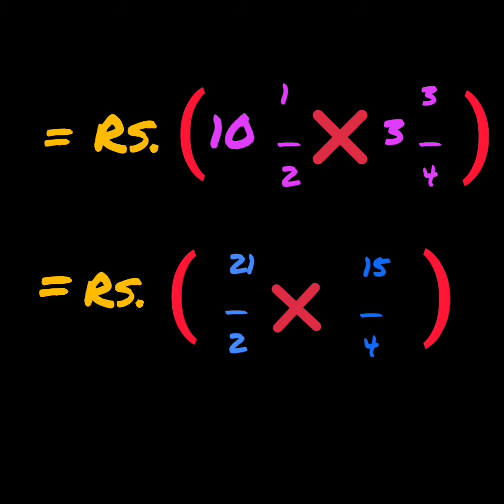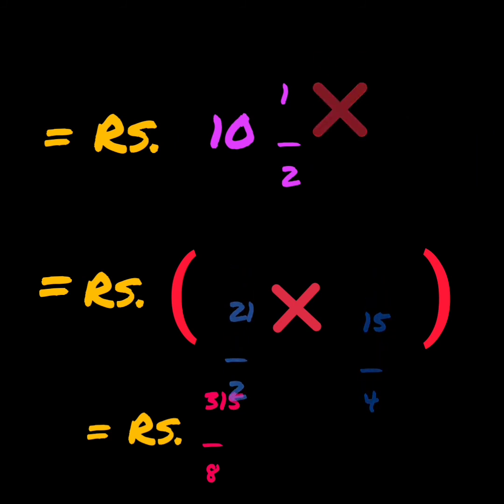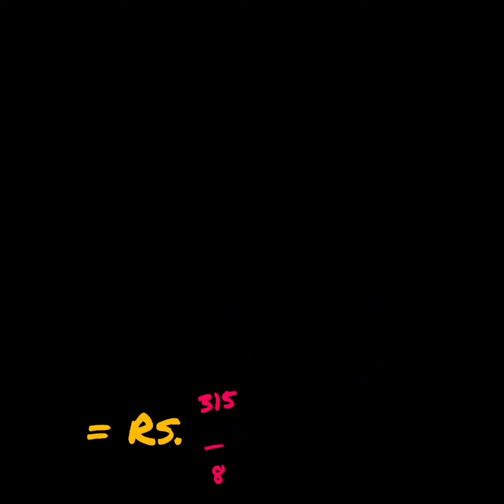Now multiply the numerators together and the denominators together. 21 times 15 is 315, and 2 times 4 is 8. Therefore, the cost of 3 and 3 by 4 kg of potatoes will be rupees 315 by 8.